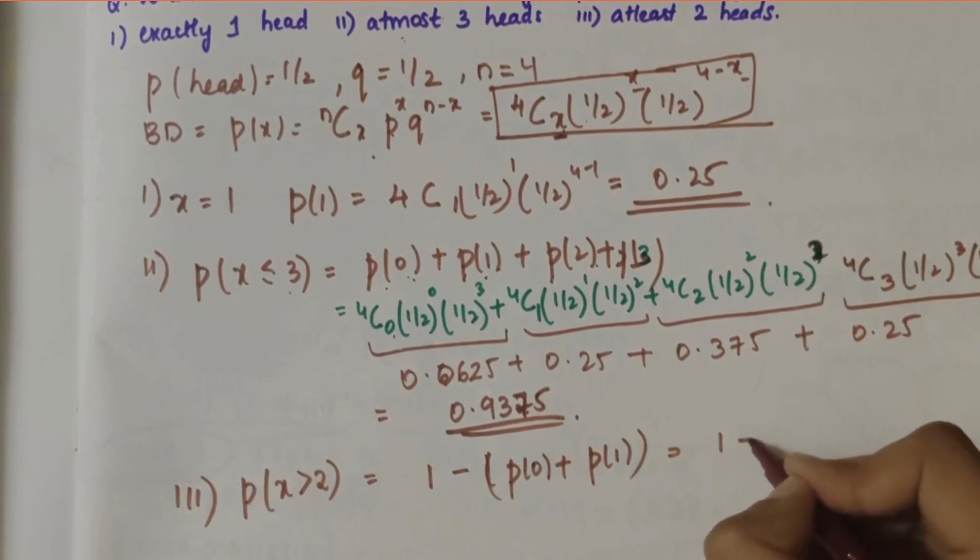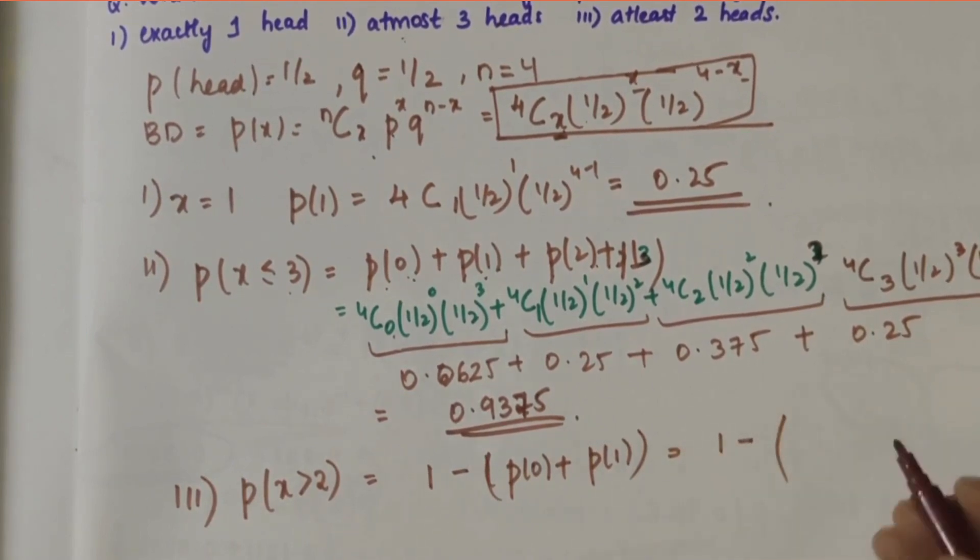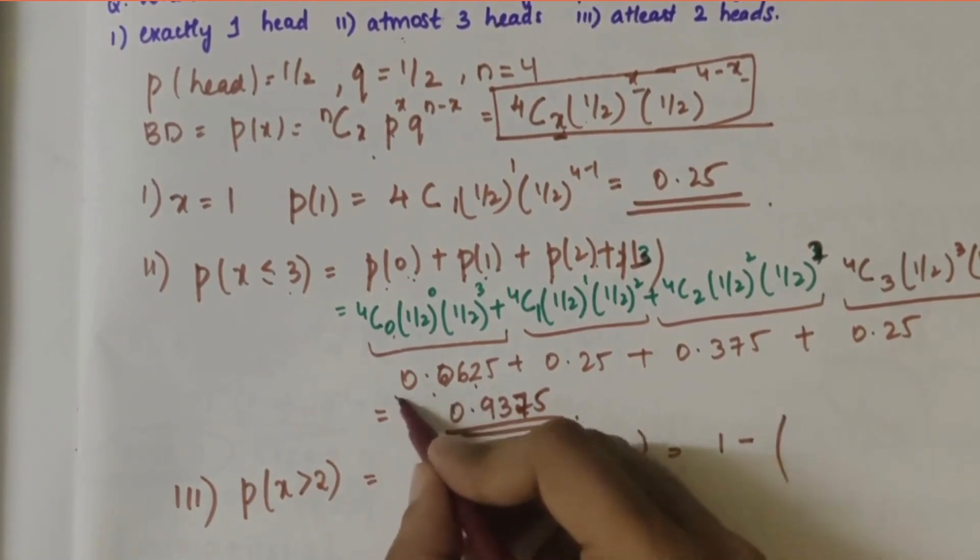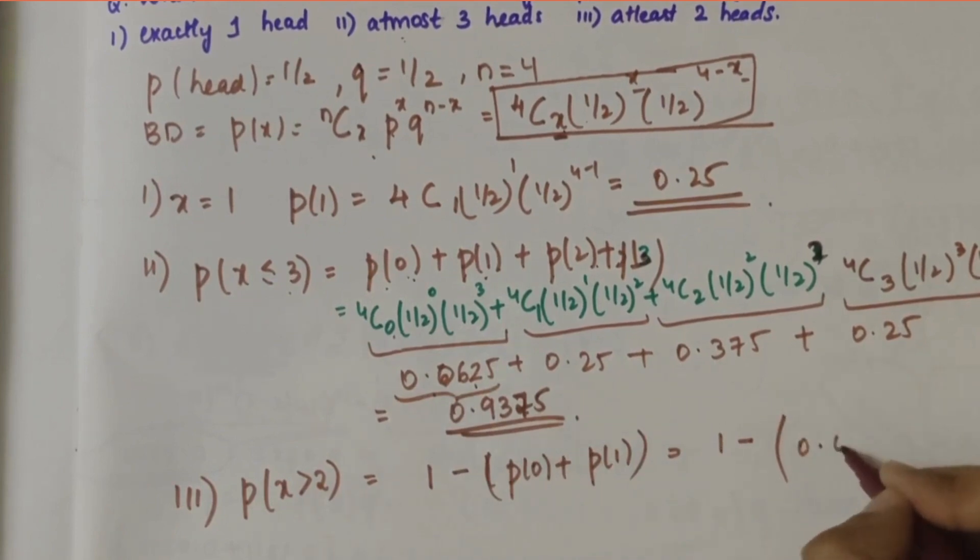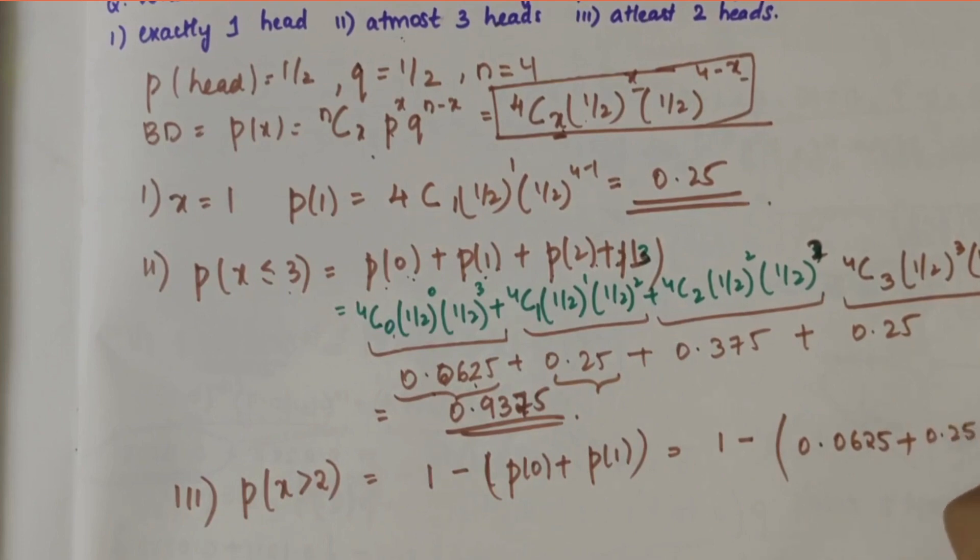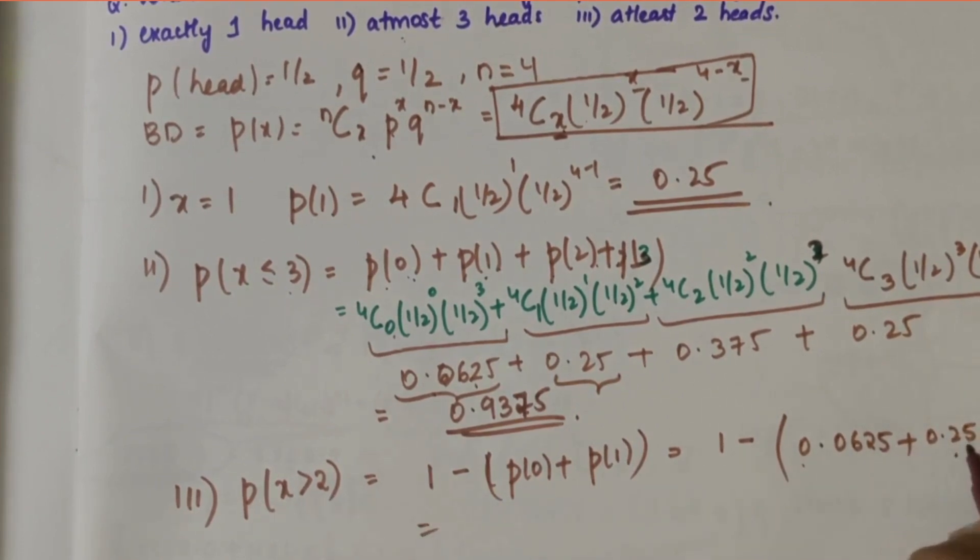So, 1 - [P(0) + P(1)] = 1 - [0.0625 + 0.25]. If you add these and subtract from one, you get 0.6875.